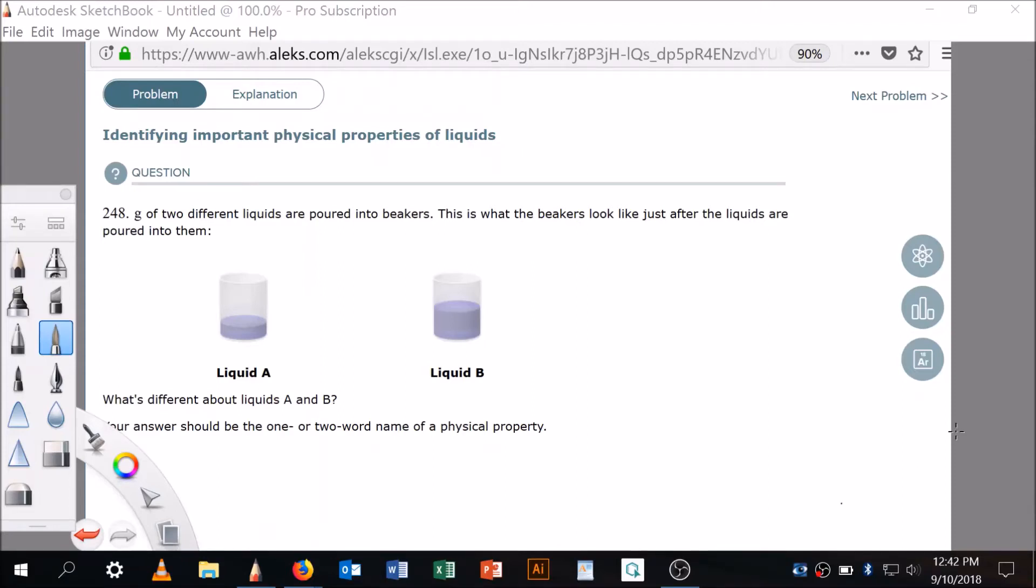Okay, so identifying important physical properties of liquids. That's what this is about, right? 248 grams of two different liquids are poured into beakers.